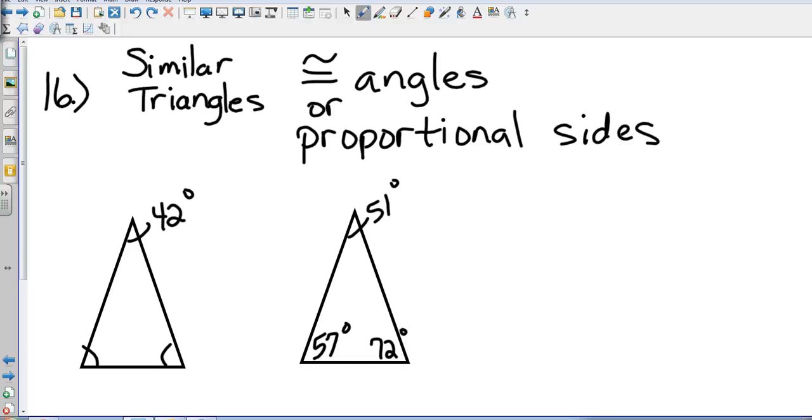Now, number 16 and 17, this is a section that I chose not to do, just so I could spend a couple of minutes on the review and not have to spend a full day on it. We're looking at similar triangles. And so, two things have to happen, or one of two things has to happen. Your triangles either have to have congruent angles, or they have to have proportional sides.